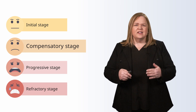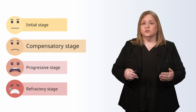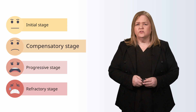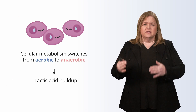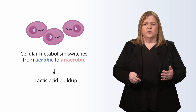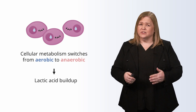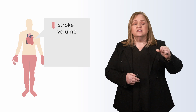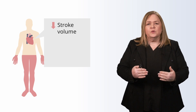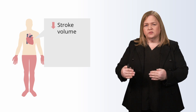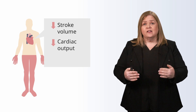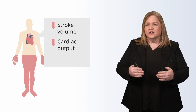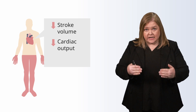Now let's talk about some signs in the compensatory stage. We already know that cellular metabolism has switched from aerobic to anaerobic and we've got a bunch of lactic acid building up. Stroke volume — what the heart is putting out — is decreased. With less volume in the intravascular space, the stroke volume is going to be lower, as will the cardiac output. It doesn't matter how fast the heart is pumping; if the volume isn't there to pump, both of these are going to be less.